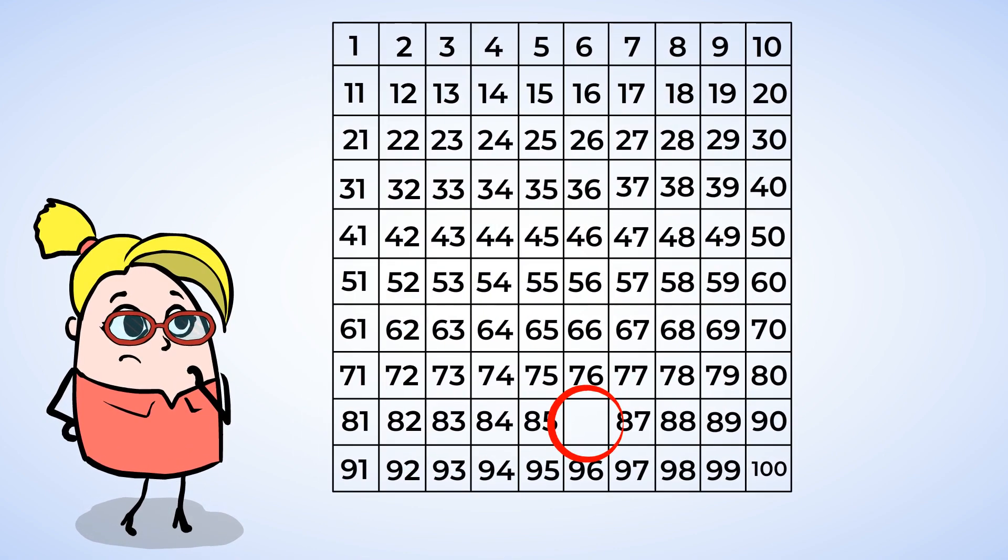So if we zoom into this missing number, we can see that the numbers above and below it both end in the number 6. The other numbers in its row begin with 80. And so that means that the missing number is 86. So we write an 8 and a 6. Nice work finding those missing numbers.